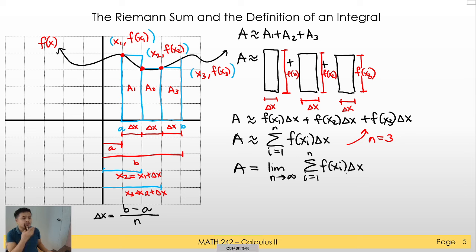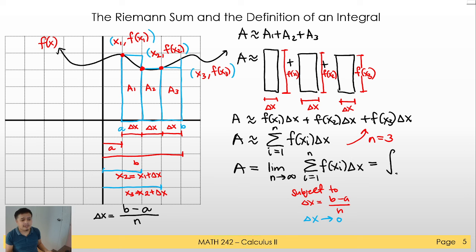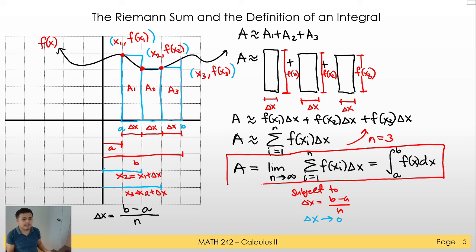The area will be equal to the limit as n approaches infinity of this summation. That is basically the definition of the area and also the integral, subject to delta x equals b minus a over n. If n is approaching infinity, therefore delta x will be approaching zero. If you add more rectangles, the delta x gets smaller and smaller. This is the definition of an integral: the limit from a to b of f of x dx.